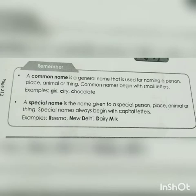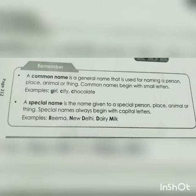So, what is meant by common name? A common name is a general name that is used for naming a person, place, animal or thing. Common names begin with a small letter. For example: girl, city, chocolate.